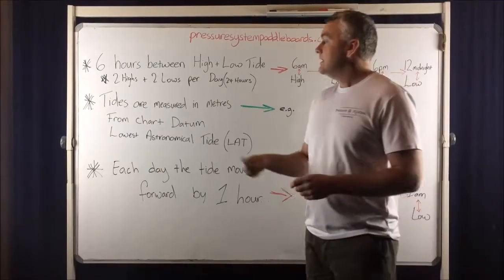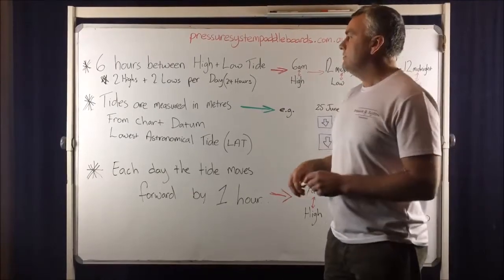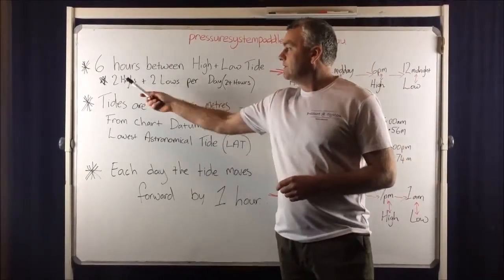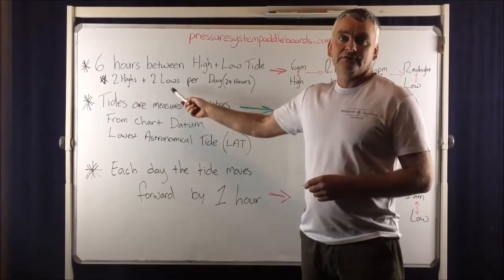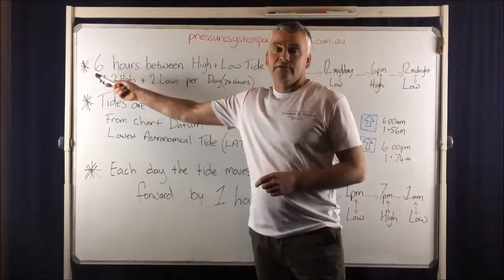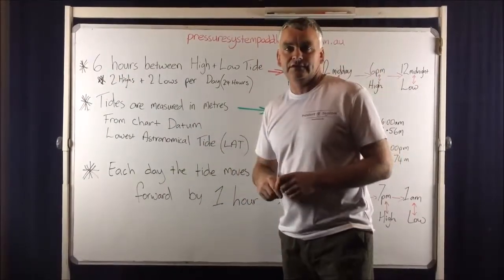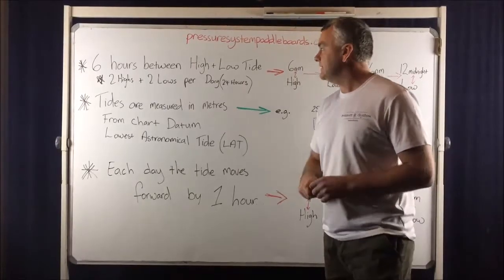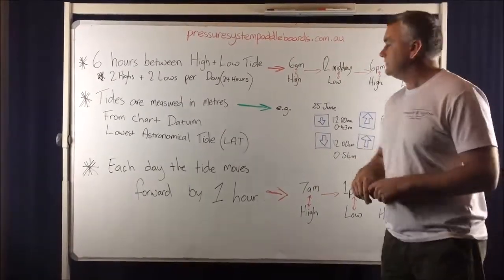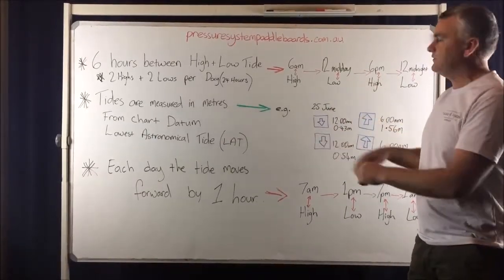So basically there's six hours between high and low tide. We have 24 hours in the day. We have two highs per day and two lows. Now there's actually six hours and 12.5 minutes in between high and low tide, but we're just going to round it off to six. It'll help us with what we're doing here. To give you a bit of an example how this works, this is just totally hypothetical. The dates and times I've made it all up just for this exercise.